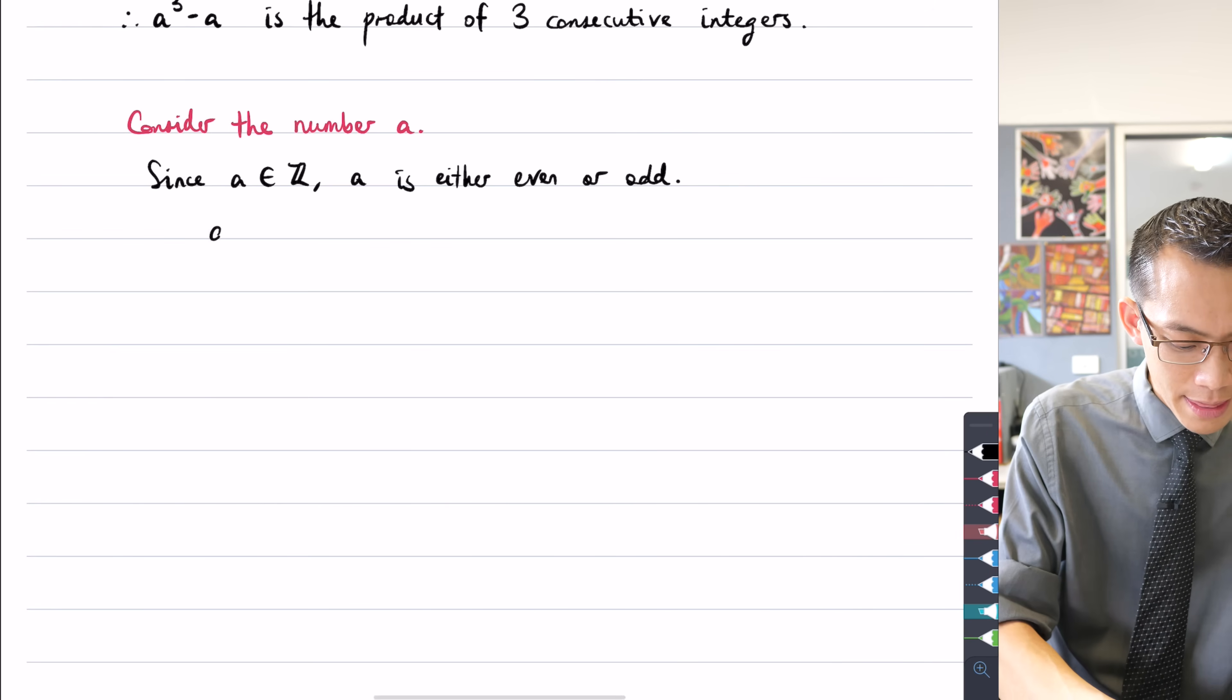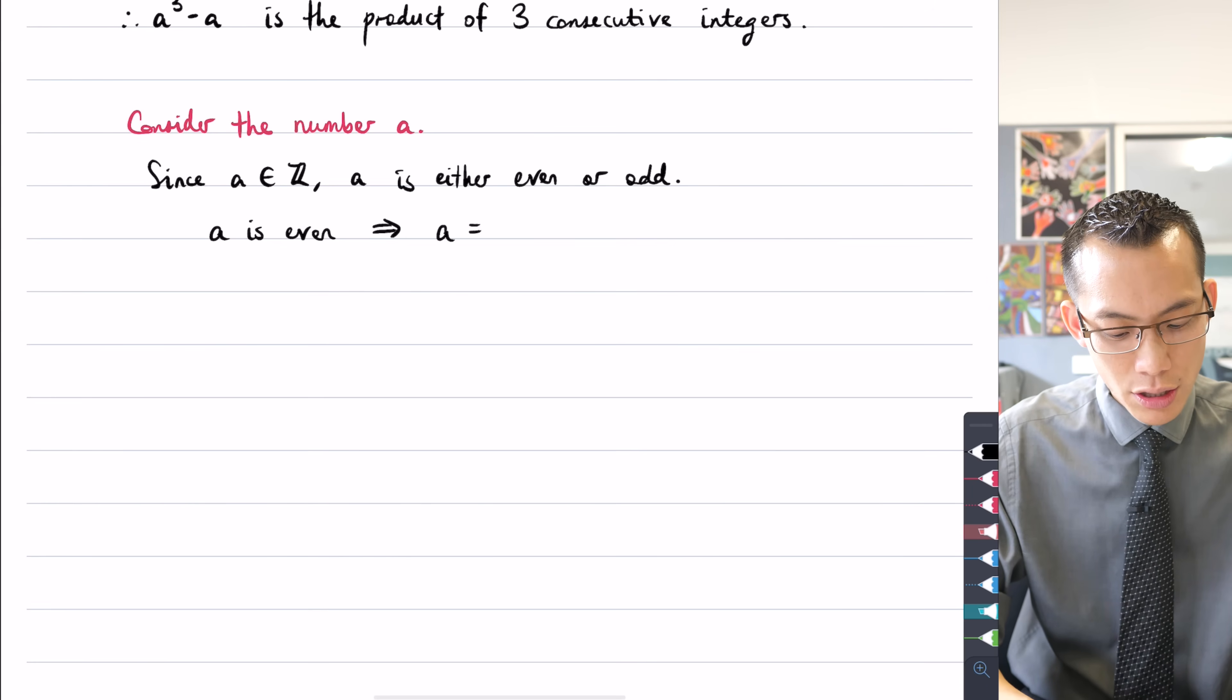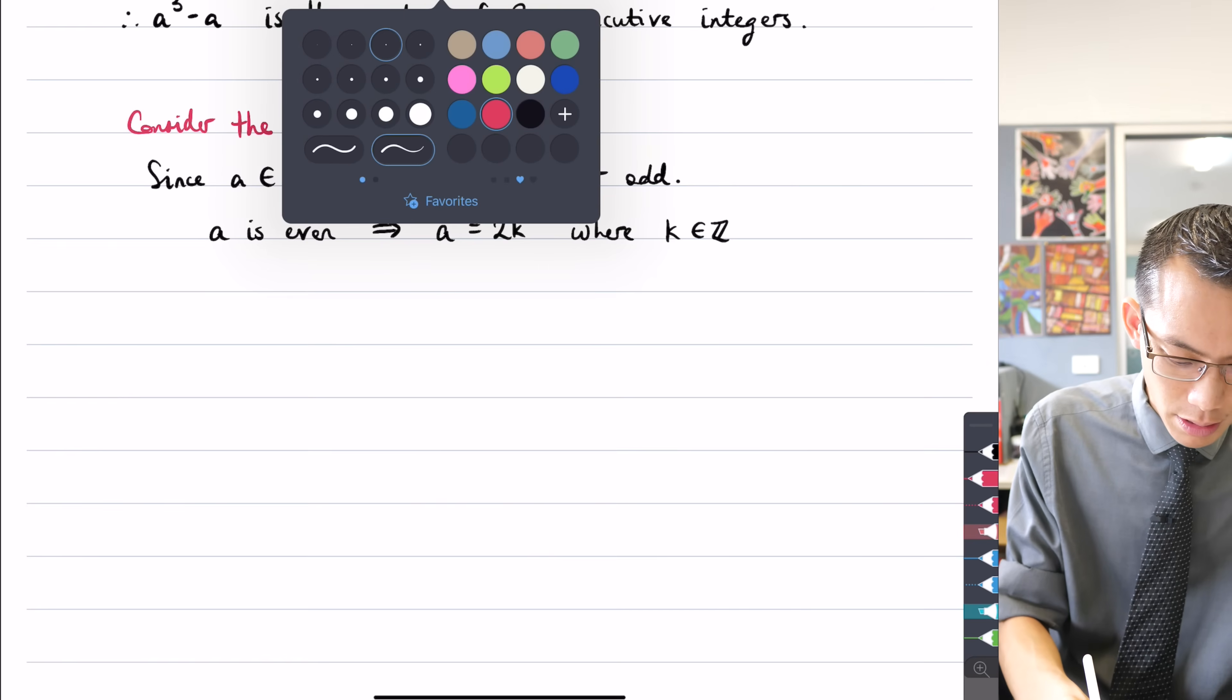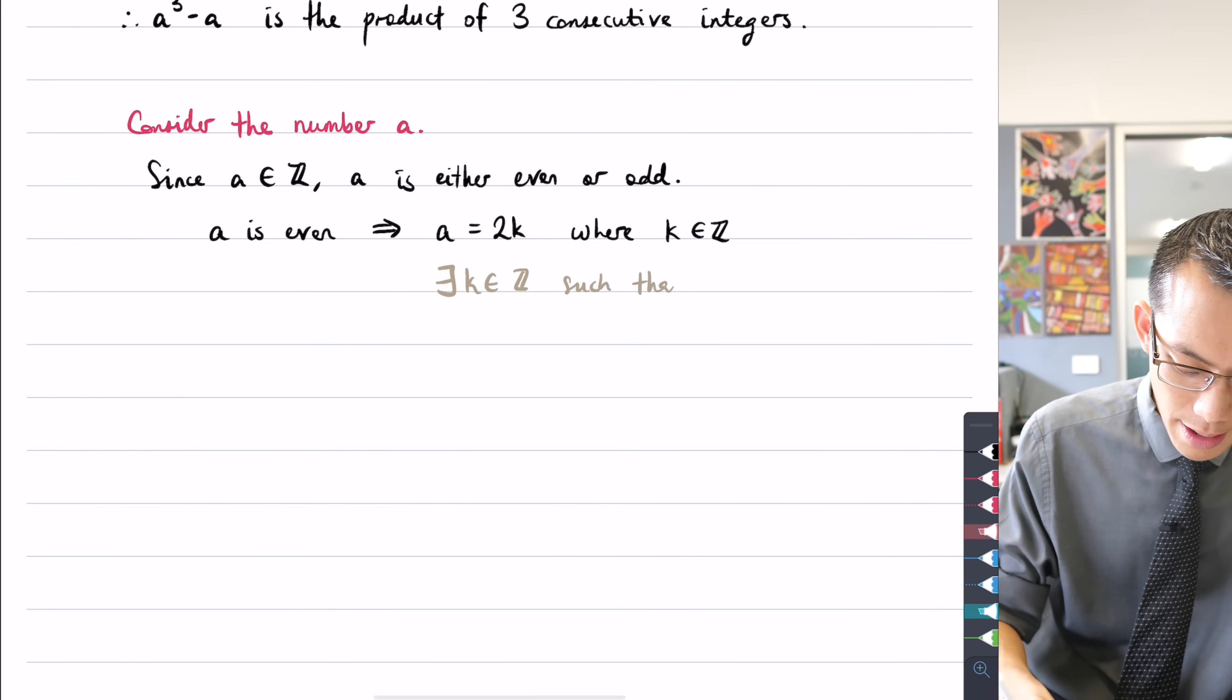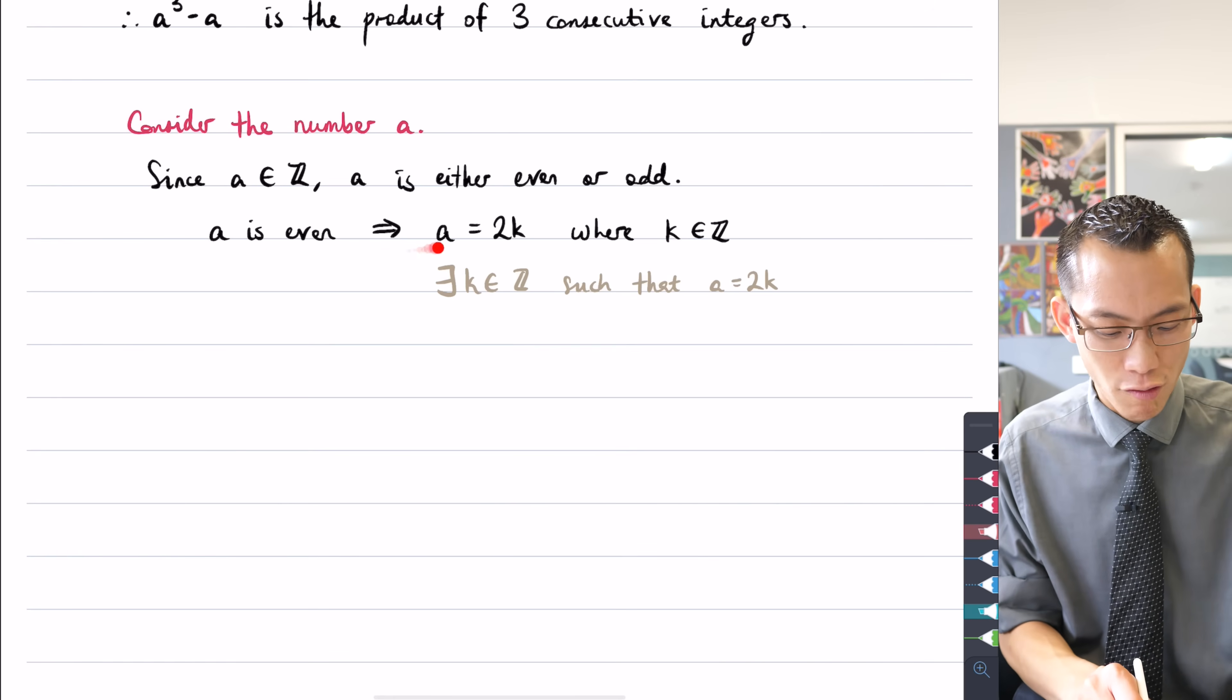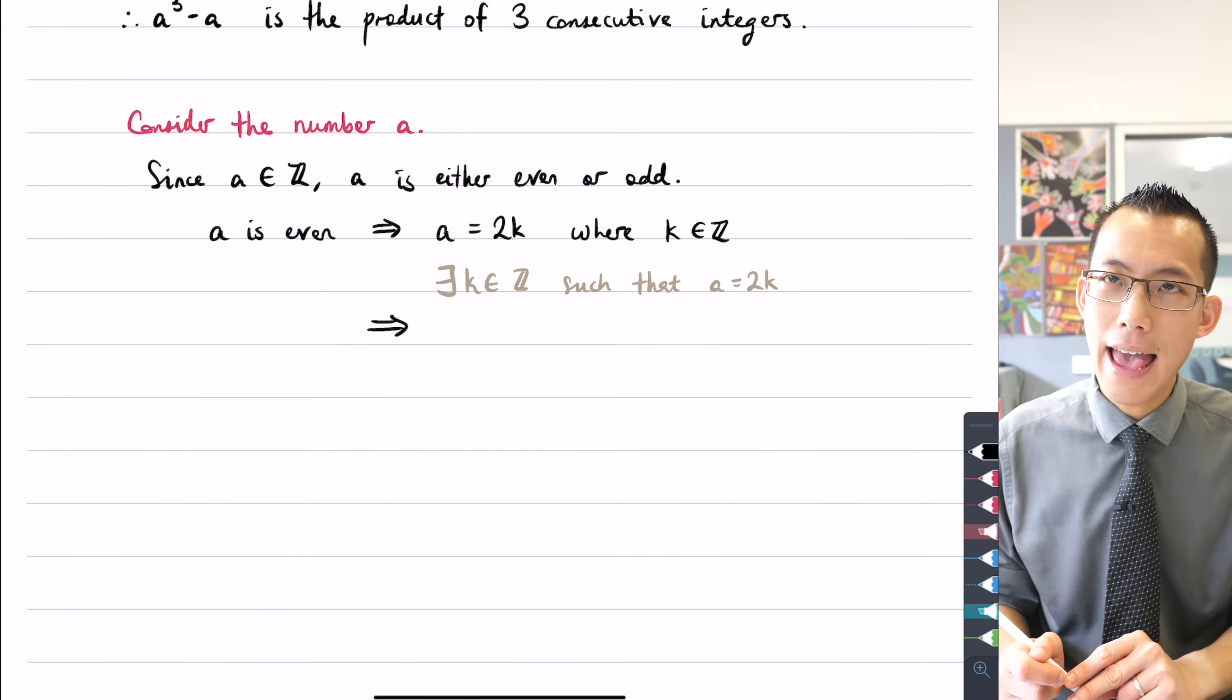So let's suppose we think about what happens if a is even. What can that tell us? Well, what it means is that I can write a in a particular form. I can say, well, I could write a as two times some integer, where k is an integer. If you wanted, you could use this other notation that we've seen already. I could say, there exists some value of k such that a is equal to double that value of k. So these two statements here are logically equivalent. I'm just going to go with this because it's kind of the way my brain works. If a is even, I can write it in this particular way.